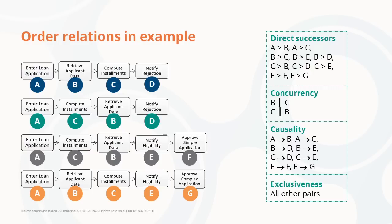We can continue with this logic for the remaining traces. The point is now to take these direct successor relations and derive the causality, concurrency, and exclusiveness relationships.